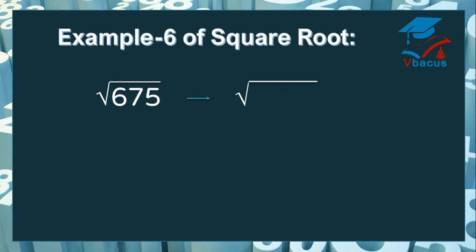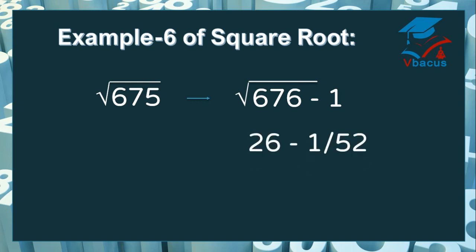Now let us take the last example — find the square root of 675. 675 is very close to 676. The square root of 676 is 26, and here you have to subtract. Divide 1 by double of 26, that is 52. Insert 0; you cannot divide.